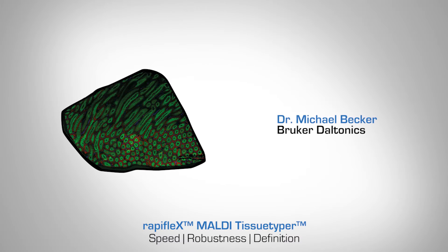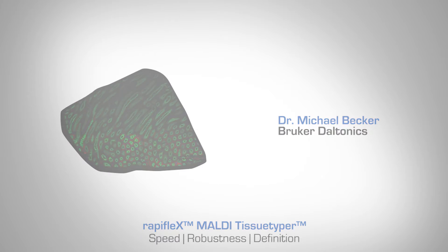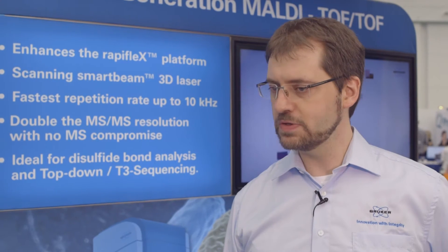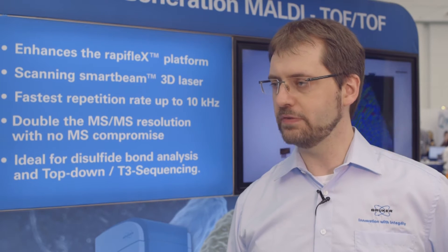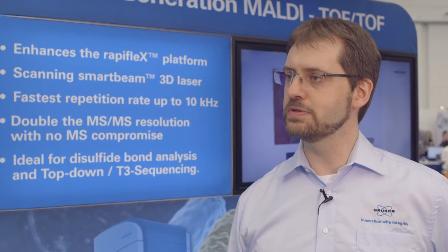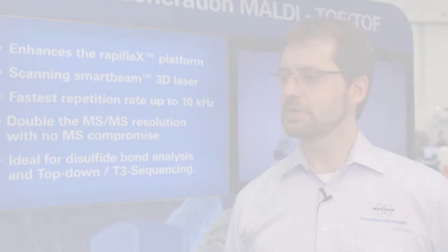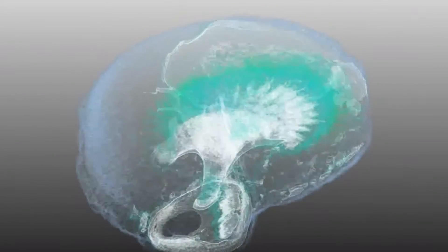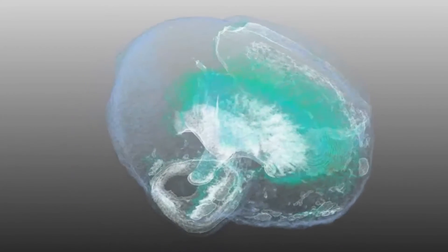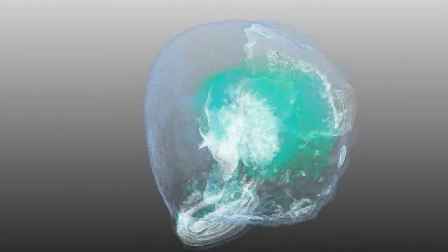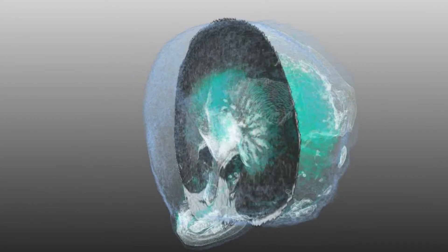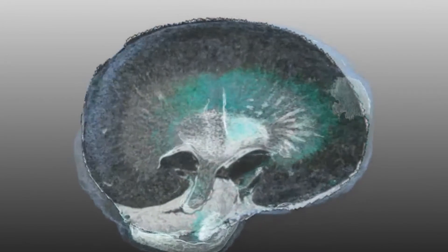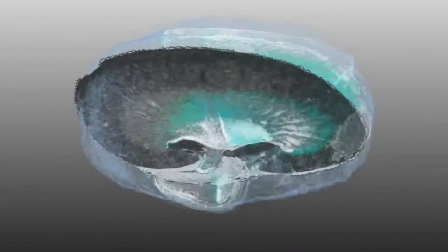MALDI imaging is acquiring mass spec data in a spatially resolved manner from the surface of any sample. The samples we are focusing on are tissues, and in particular human tissue samples. There we are trying to elucidate new biomarkers to look at disease stages or responsiveness to certain drugs for patients.